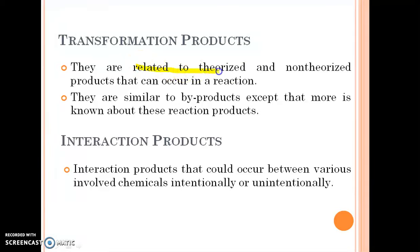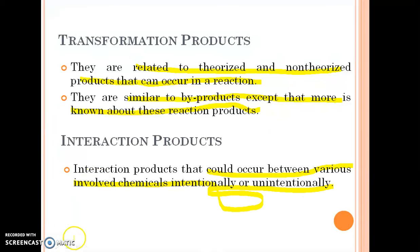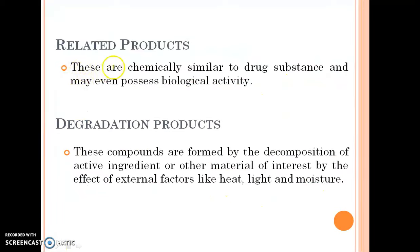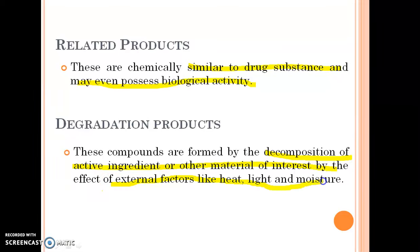Transformation products are related to theorized and non-theorized products that can occur in a reaction. They are similar to byproducts, except that more is known about these reaction products. Interaction products are those that could occur between various involved chemicals, intentionally or unintentionally. Related products are chemically similar to drug substances and may even possibly possess biological activity. Degradation products are compounds formed by the decomposition of the active ingredient or other material of interest due to external factors like heat, light, and moisture.